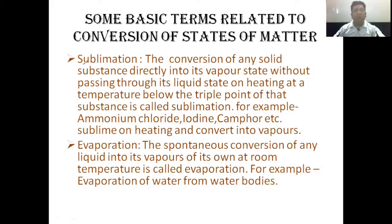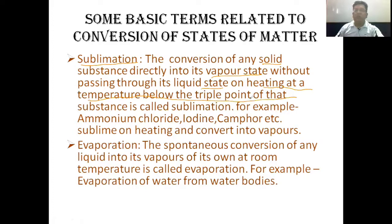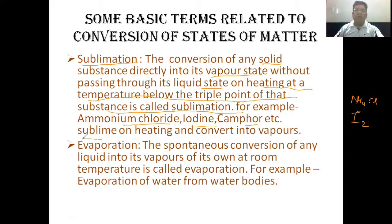The next term is sublimation: the conversion of a solid substance directly into its vapor state without passing through its liquid state on heating, at a temperature below the triple point of that substance. Examples of substances that sublime on heating: ammonium chloride (NH4Cl), iodine (I2), and camphor (kapur).